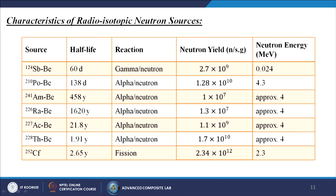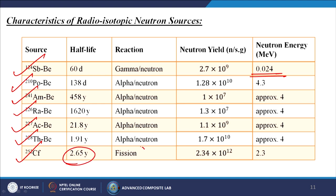Characteristics of different radioisotopic neutron sources: antimony-beryllium has a half-life of 60 days, uses a gamma-neutron reaction, neutron yield of 2.7×10⁹ neutrons per second per gram, and neutron energy of 0.024 MeV. The table also includes polonium-beryllium, americium-beryllium, radium-beryllium, actinium-beryllium, and thorium-beryllium. Californium has the highest values — half-life of 2.65 years, fission reaction, neutron yield of 2.34×10¹² neutrons per second per gram, and neutron energy of 2.3 MeV.